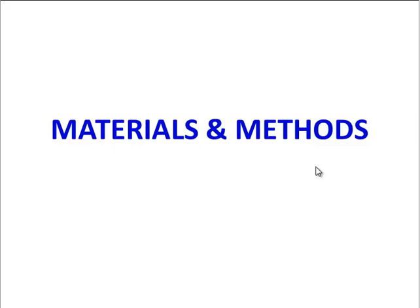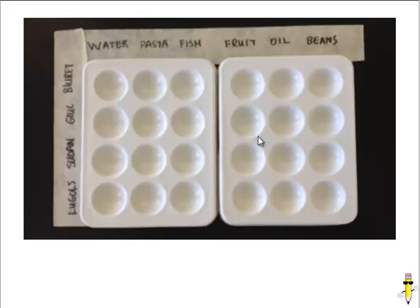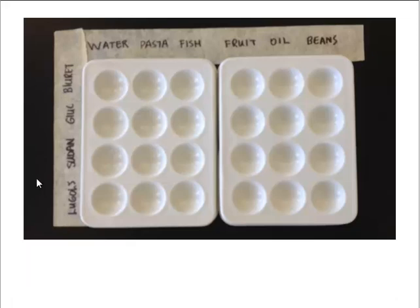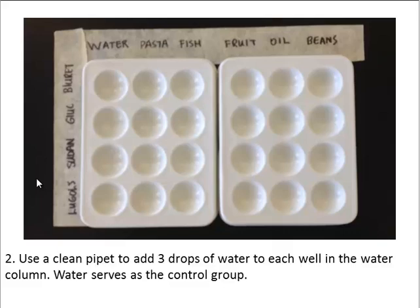Here's how the protocol will work. You're going to be using two spot plates side by side, and then use masking tape to label what is being put into each spot plate. Along the columns you'll put the different types of food, and the rows are where you will put each particular indicator. When you're ready to start, use a clean pipette to add three drops of water to each well in the water column — water will serve as your control group, since it doesn't have any nutrients, so we would expect a negative test result for all indicators.